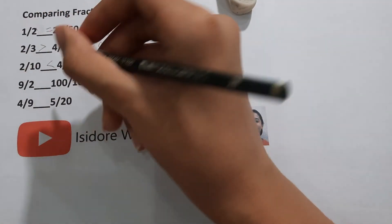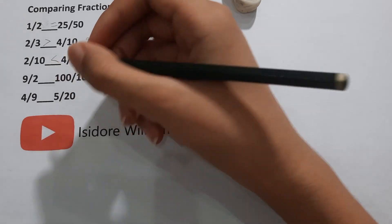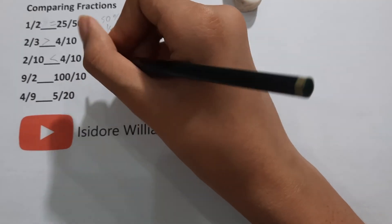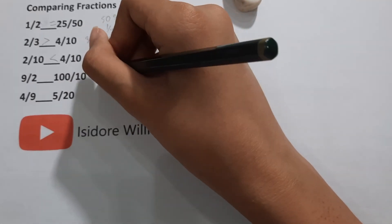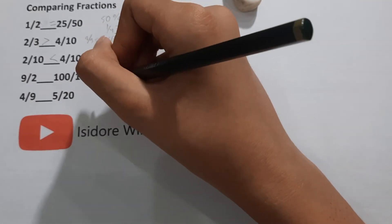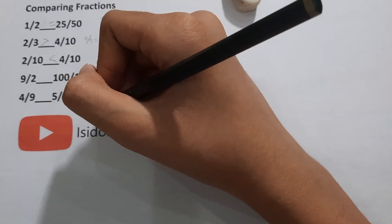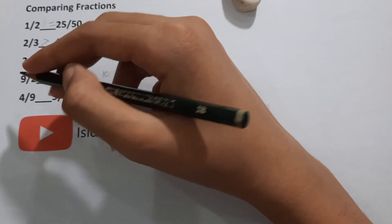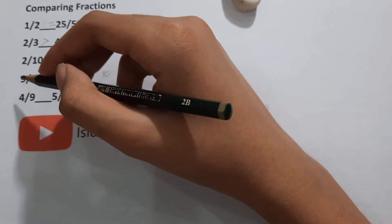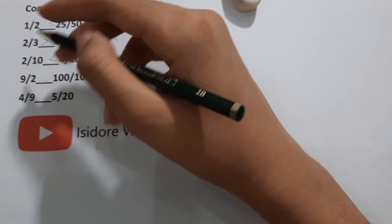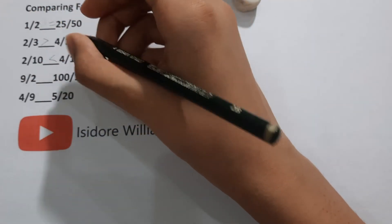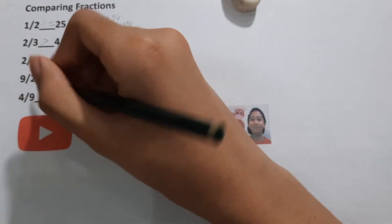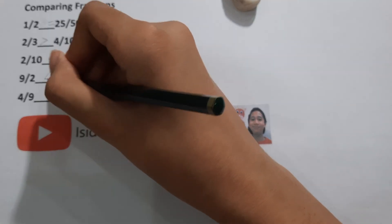9 divided by 2. Now this is maxed. 100 divided by 10 is 10. 9 divided by 2 is 4. So yeah, that is obviously larger.